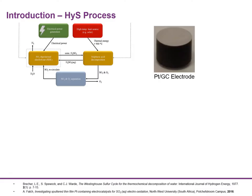This study will concentrate on the electrocatalyst used in the hybrid sulfur cycle, or the HyS process. The HyS process has shown potential to be a greener method to produce hydrogen. A study conducted by Northwest University aimed at reducing the amount of platinum used in the process by means of thin film metal catalysts.